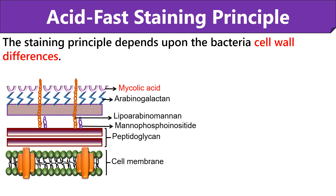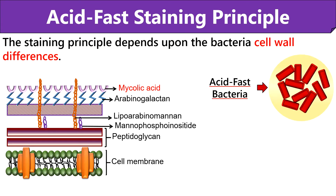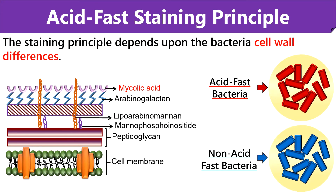The mycolic acid makes the bacteria resistant towards the effect of the acid decolorizer, due to which the acid fast bacterial cells do not lose the color of the primary stain, that is carbolfuchsin, and they appear red in color. But non-acid fast bacteria lack mycolic acid in their cell wall, so the cells decolorize by the effect of acid alcohol and take up the color of the counter stain, that is methylene blue, and appear blue in color.